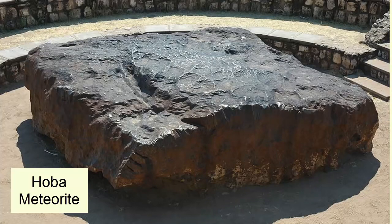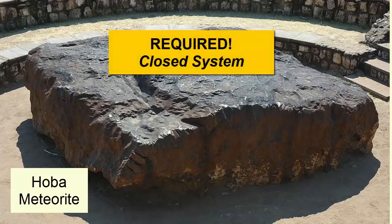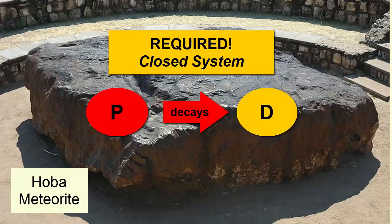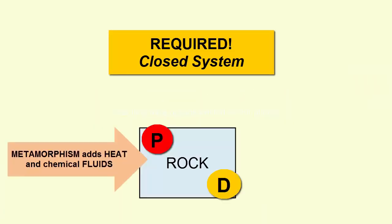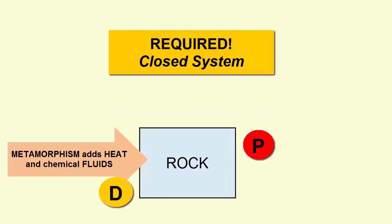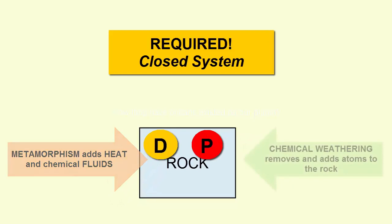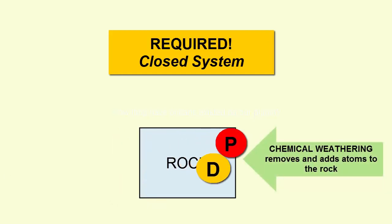Second step: we need to ensure the rock or shell or bone fragment has remained a closed system. While parent decays into daughter, there must be no migration of parent or daughter isotopes into or out of the rock. Otherwise, the ratios we see do not reflect decay over the lifetime of the rock. For example, if a rock has undergone extensive metamorphism at high heats, atoms become mobile within the rock and can migrate in and out. Similarly, if a rock undergoes chemical weathering on its surface, minerals can break down and atoms can migrate in and out.